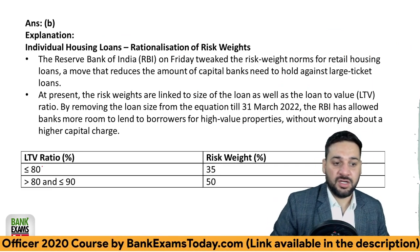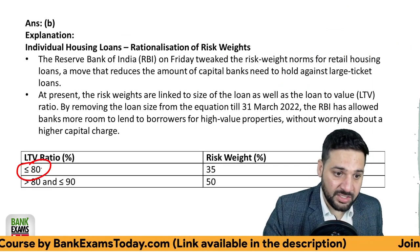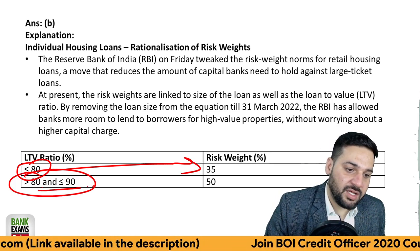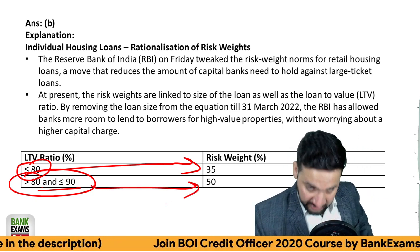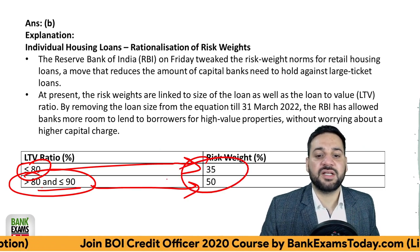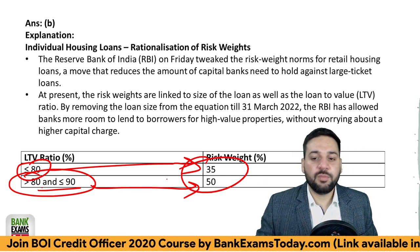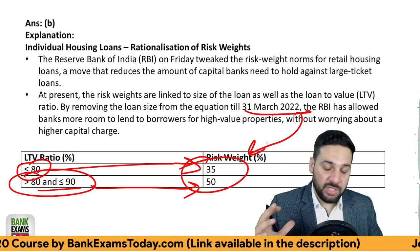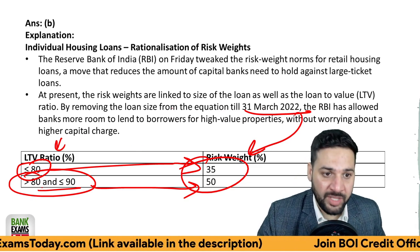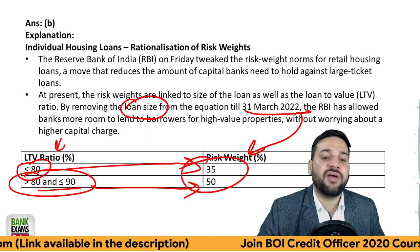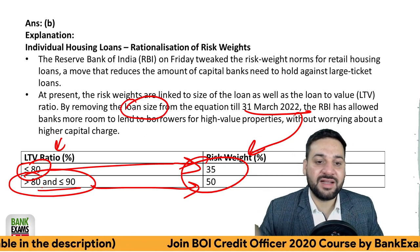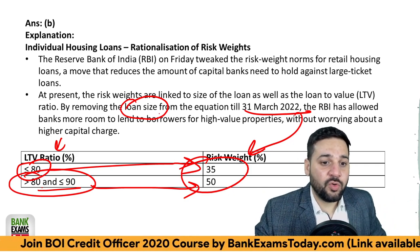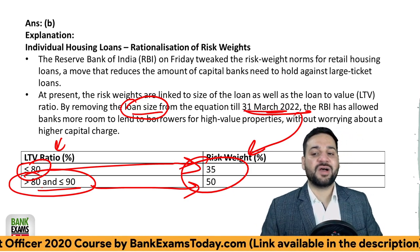For retail housing loans: if the LTV ratio is less than 80 percent, the risk weight is 35 percent. If the LTV ratio is between 80 and 90 percent, the risk weight is 50 percent. Previously there were two criteria — LTV ratio and loan size — but to boost the real estate sector, the loan size criteria has been removed from the equation till 31st March 2022.